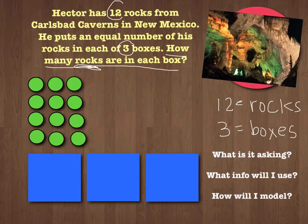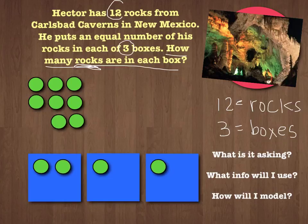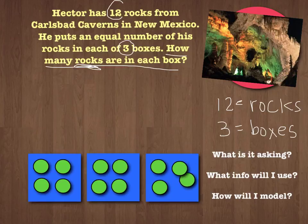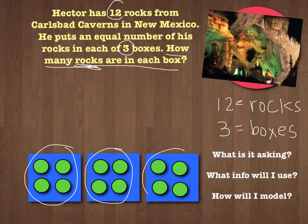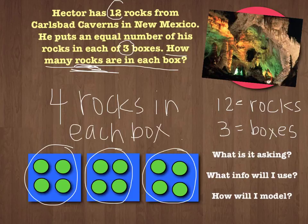Let's put 1 rock in each box, then share another rock in each box. Are we done? Nope, so let's keep going — 1 for each box, making sure they remain equal groups. We continue placing 1 in each box until all rocks are distributed. Now we have shared them into equal groups. How many in each box? We have 4 here, 4 here, and 4 here. So our answer is 4 rocks in each box.